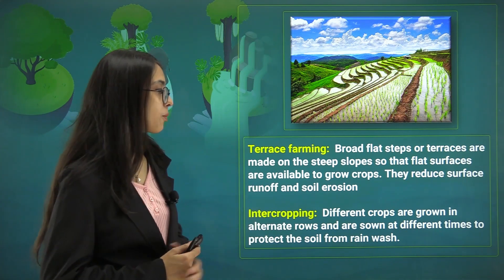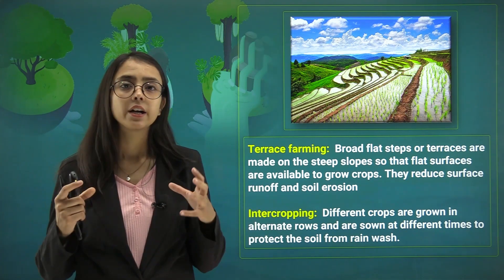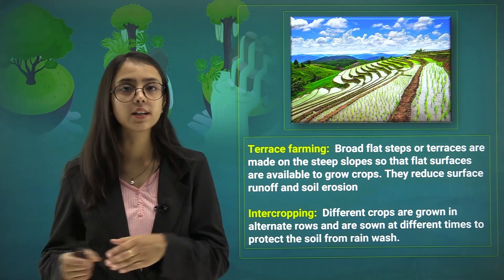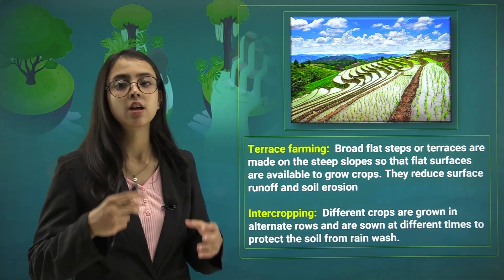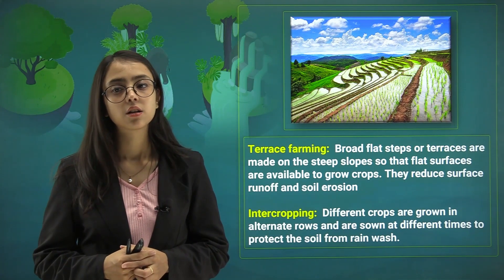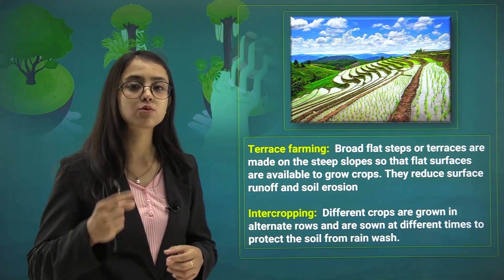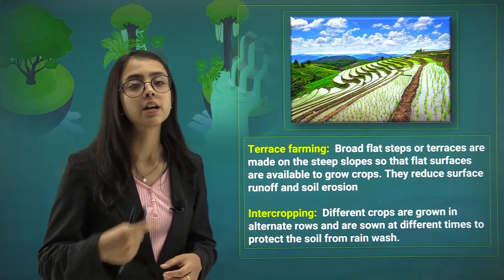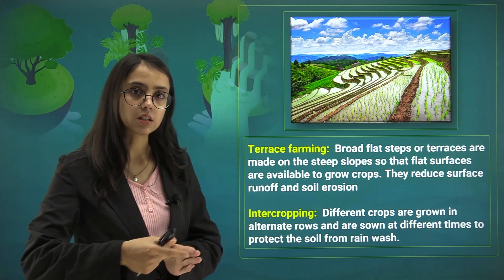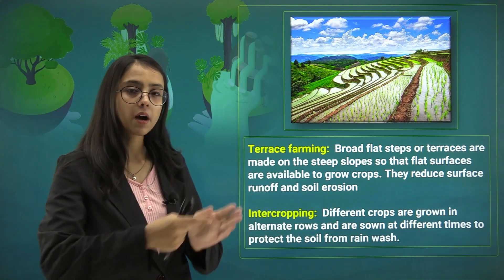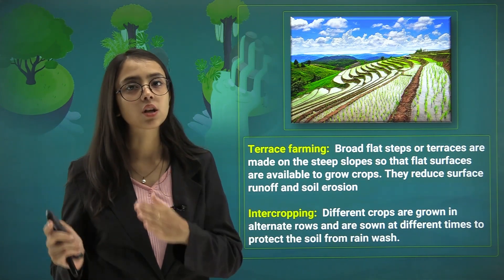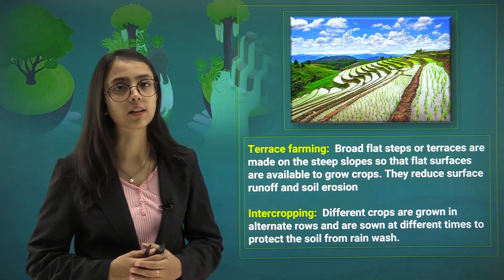Next is intercropping. Intercropping refers to when different kinds of crops are grown in alternative rows and are sown at different times to protect the soil from rain wash. For example, growing potatoes and onions one by one during different times so that the soil is not eroded by rains.